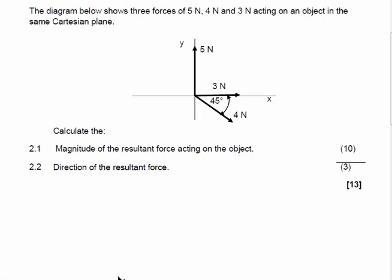So we're going to do this question together. It shows you three forces of 5 Newton, 4 Newton and 3 Newton acting on an object in the same Cartesian plane. So what I want you to do here is calculate the magnitude of the resultant force acting on the object. As you can see, this question is for 10 marks, which is a lot in an exam. So 10 marks means we need to show a lot of calculations. We can't just come up with a final answer or one line and think we're going to get the marks. So let's quickly do this.